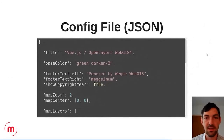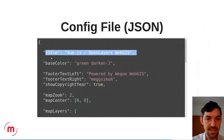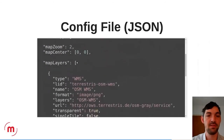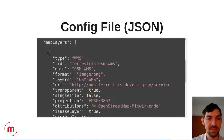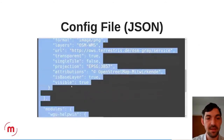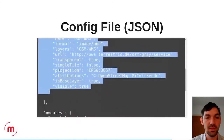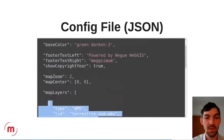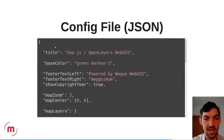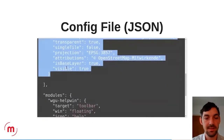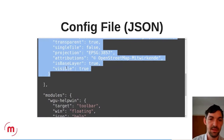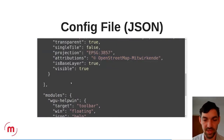The configuration file looks like a basic JSON with keys and values. You provide, for example, a layer definition, and when the application starts it uses the parts from the configuration file and builds the application as you want it.